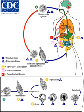In asymptomatic infections, the amoeba lives by eating and digesting bacteria and food particles in the gut, a part of the gastrointestinal tract. It does not usually come in contact with the intestine itself due to the protective layer of mucus that lines the gut. Disease occurs when amoeba comes in contact with the cells lining the intestine. It then secretes the same substances it uses to digest bacteria, which include enzymes that destroy cell membranes and proteins. This process can lead to penetration and digestion of human tissues, resulting first in flask-shaped ulcerations in the intestine.